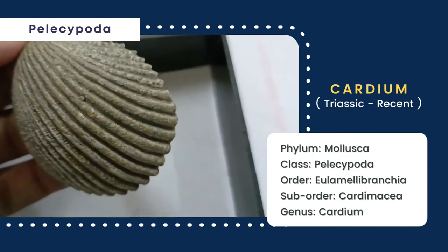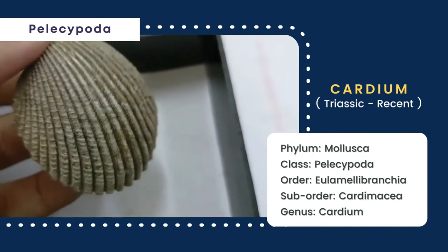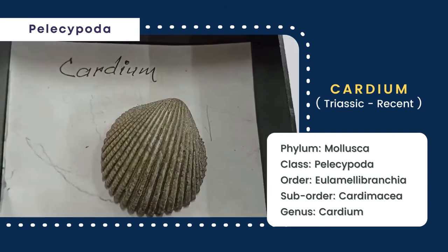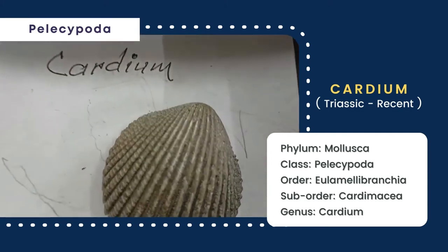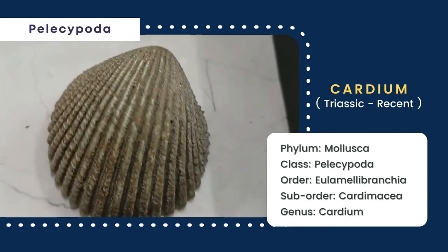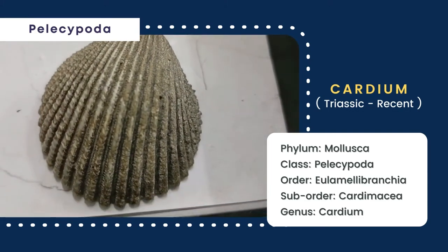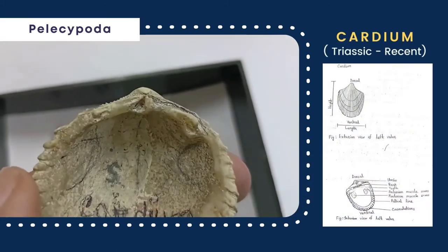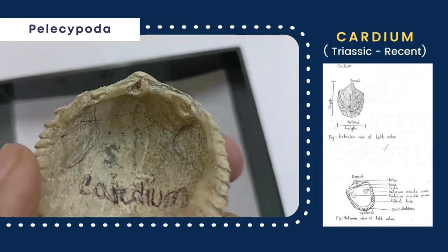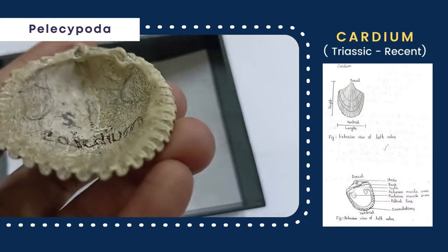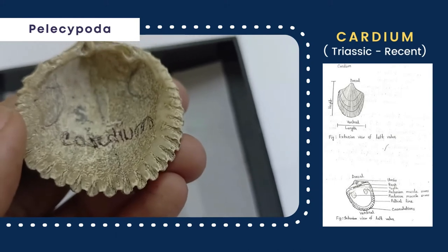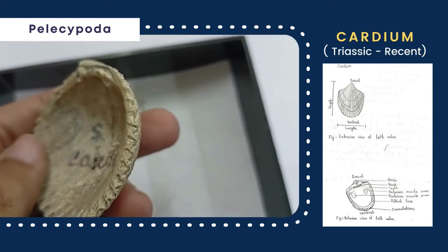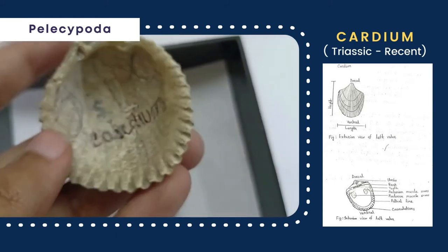Next, this sample is Cardium, whose shell is oval-shaped, convex, and inequilateral. The height is greater than its length. The exterior of the valve is ornamented with radial lines and growth lines. The valve shows heterodont type of dentition, and the ventral margin is crenulated.